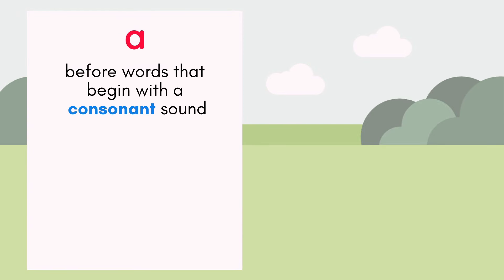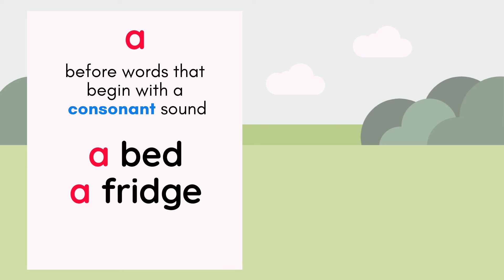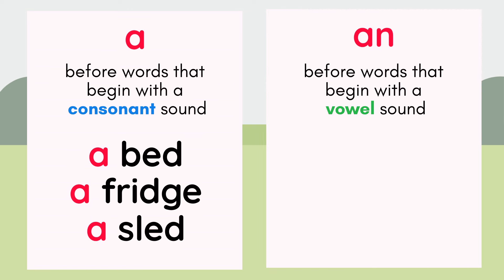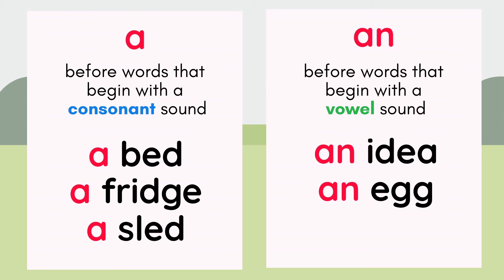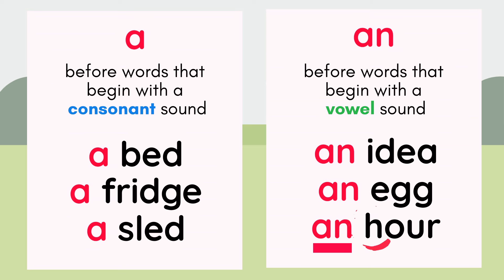Here are words that begin with the consonant sound. Here are words that begin with the vowel sound: a, e, i, o, u. An idea. An egg. An hour. Notice that an is used before hour, even though it starts with an h. That's because it's pronounced with a vowel sound, hour. The tip here is to focus on sound, not letter.